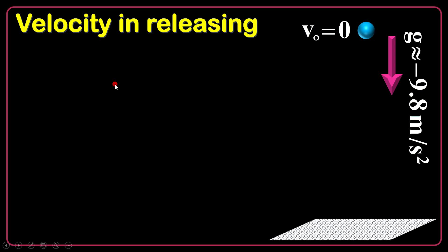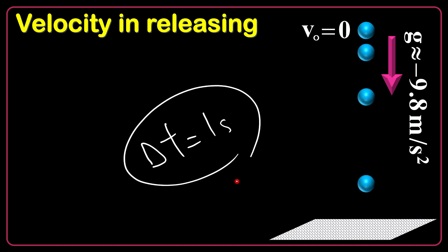Now, let's check a numerical case. I release an object from rest and, again, I will have my stroboscopic imaging in every, let's say, one second. So, every picture is taken one second after the other one.